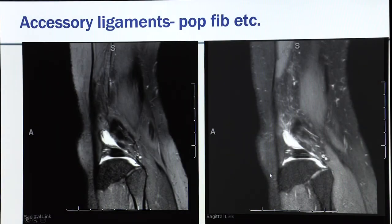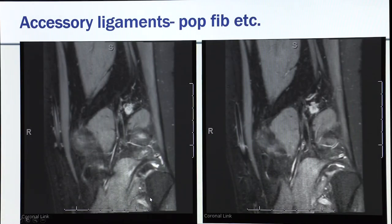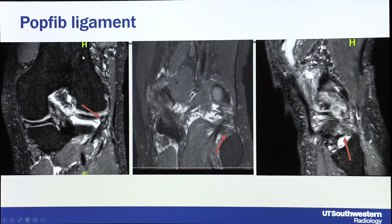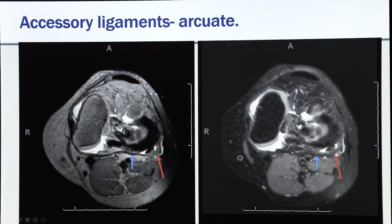Smaller ligaments are also visible: the meniscofibular ligament, the popliteofibular ligament on coronal images, and injury to that structure — a bone fragment avulsed with the popliteus tendon attached, and the popliteofibular ligament quite thick and frayed. Accessory ligaments like the arcuate ligament are best seen on axial images: the medial band and lateral band, where you can see the lateral band is torn on both non-fat-sat and fat-sat images.